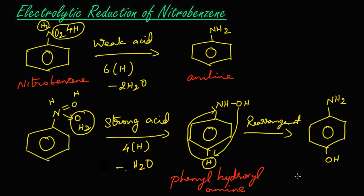Phenylhydroxylamine on rearrangement gives para-aminophenol. To summarize: the electrolytic reduction of nitrobenzene takes place in two ways — in weak acid it gives aniline, and in strong acid it gives first phenylhydroxylamine, which on rearrangement gives para-aminophenol as the product. Thank you.